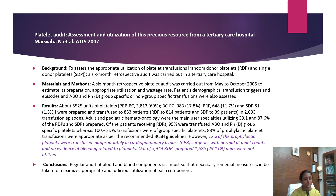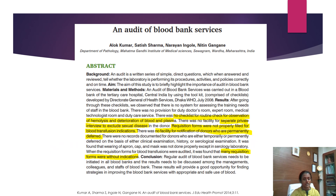In a CABG case with normal platelet counts and no evidence of bleeding related to platelets, of the 5,444 RDPs prepared, 1,585 units were not utilized. There was no checklist for routine checking of hemolysis or deterioration of blood or plasma, no facility for a separate private interview to exclude sexual diseases, requisition forms were not properly filled for blood transfusion indications, and there was no facility for notification of permanently deferred donors.